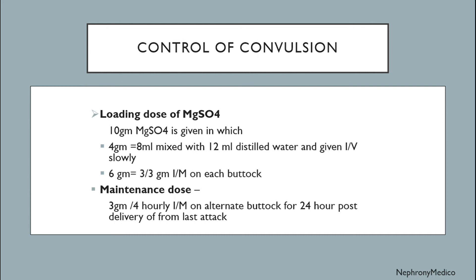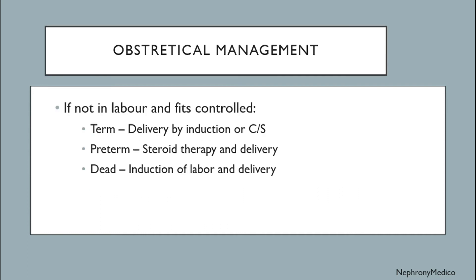The loading dose also includes 6 grams (3 grams per each buttock) given intramuscularly. The maintenance dose is 3 grams every 4 hours intramuscularly on alternate buttocks, for 24 hours post-delivery or from the last attack.